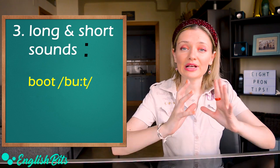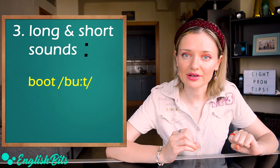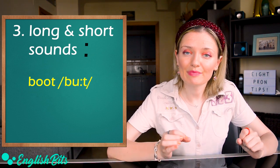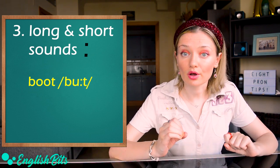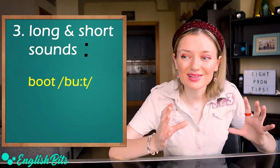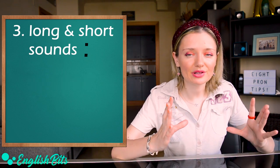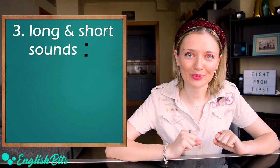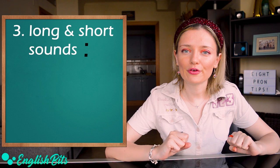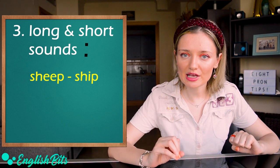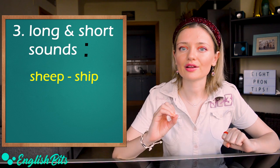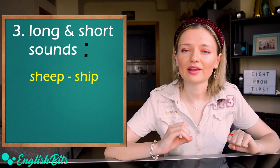In English there are minimal pairs, which means that the meaning of the word changes depending if the sound is long or short. And sometimes there is a huge difference in meaning, so you need to be careful. Let's look at some minimal pairs. The first one is sheep and ship. So long e and short. Another example.